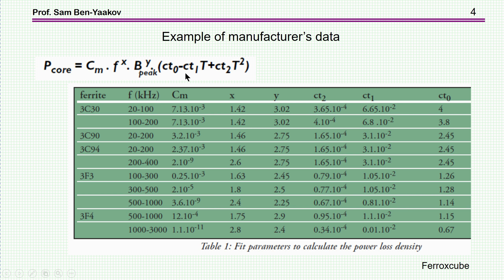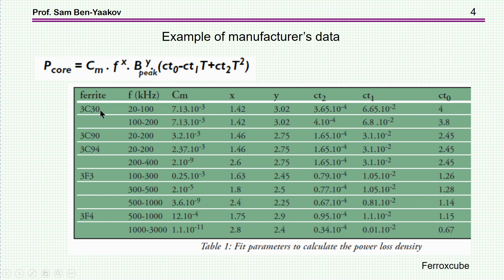The issue of temperature and frequency dependence is actually dealt with by the manufacturer. This is an example of some data given by Ferroxcube. What they are doing here is: this is the basic Steinmetz equation, these are the coefficients, and this is a correction for temperature changes — a second-order fitting equation for the change due to temperature. These coefficients are a function of the material and also of the frequency range. So here we see, for example, for the 3C30, for this frequency range, we have the coefficients.